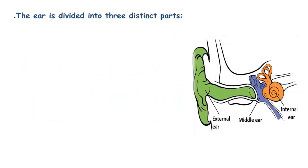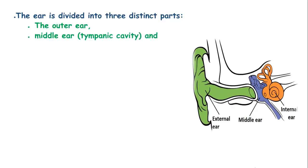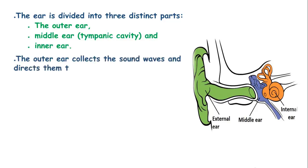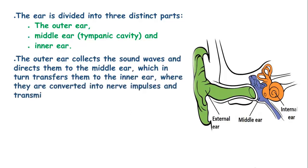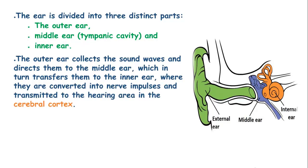The ear is divided into three distinct parts: the outer ear or external ear, the middle ear known as the tympanic cavity, and the inner ear. The outer ear collects sound waves and directs them to the middle ear, which in turn transfers them to the inner ear, where they are converted into nerve impulses and transmitted to the hearing area in the cerebral cortex.